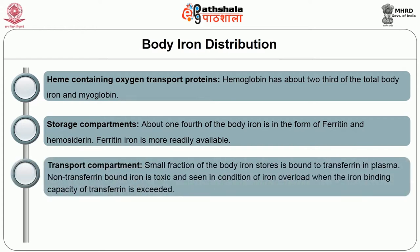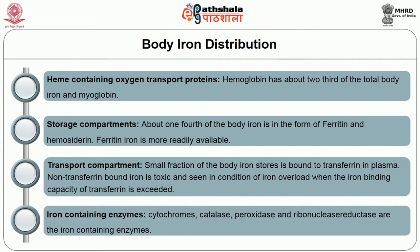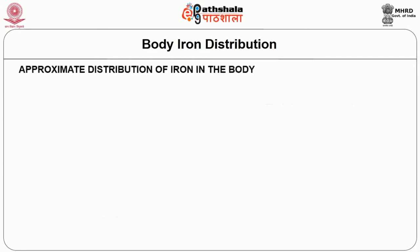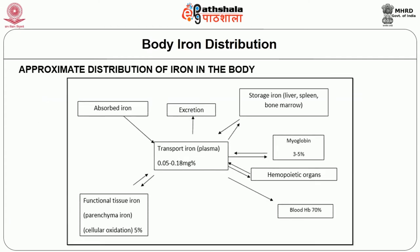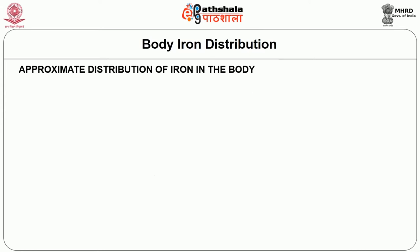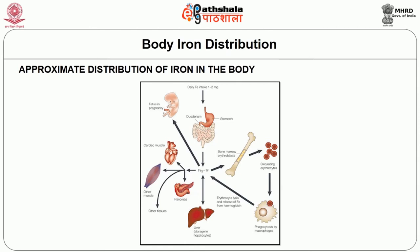The third compartment is the transport compartment, where a small fraction of body iron stores is bound to transferrin in plasma. Non-transferrin bound iron is toxic and is seen in conditions of iron overload when the iron-binding capacity of transferrin is exceeded. The fourth compartment is iron-containing enzymes — cytochromes, catalase, peroxidase, and ribonuclease reductase. A flow chart shows the approximate distribution of iron in the body and a diagram depicts iron storage.